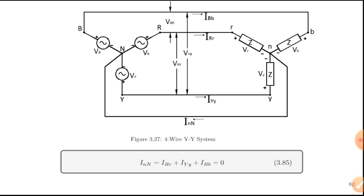Why is the neutral wire critical for unbalanced systems? If there's unbalance on the load, there's an excess current. If there's a neutral line, there's a return path from the load back to the source. But if the neutral line is not present, the current will still flow through the load, causing severe voltage variation — it can be over-voltage or under-voltage. In some loads, voltage is very sensitive; you cannot have over-voltage or under-voltage. So it's safe to use a 4-wire system.